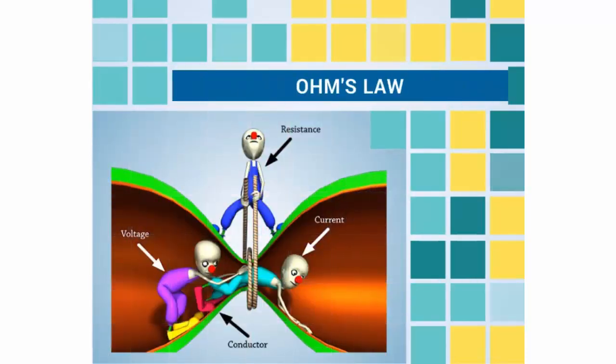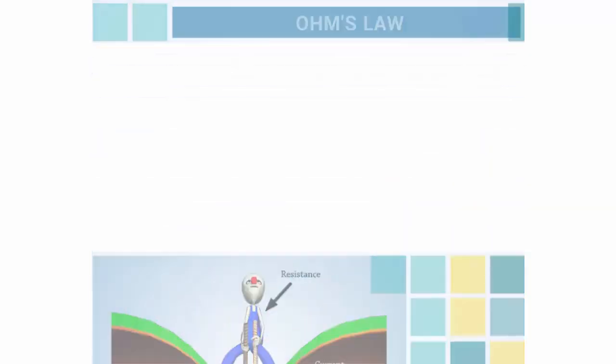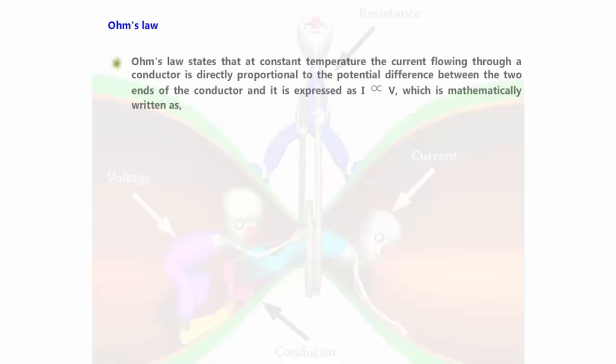Ohm's law: let's see the demonstration of Ohm's law. Ohm's law states that at constant temperature, the current flowing through a conductor is directly proportional to the potential difference between the two ends of the conductor. It is expressed as I ∝ V, which is mathematically written as I = V/R.